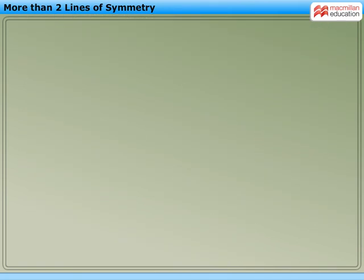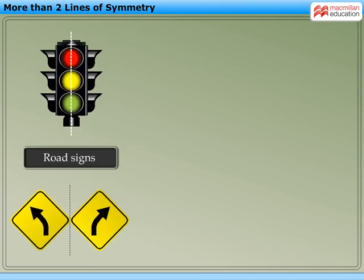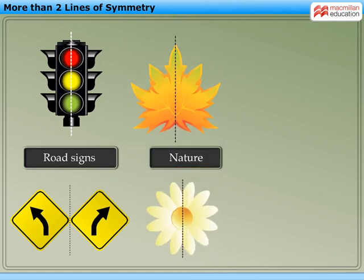We come across many figures in our daily life that are symmetrical. For example, many road signs that we see every day have lines of symmetry. Nature has plenty of things having symmetry in their shapes.